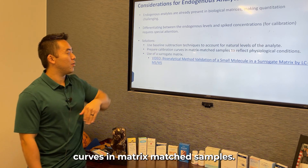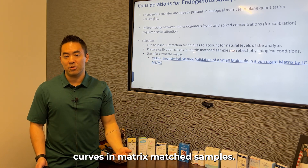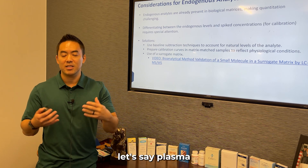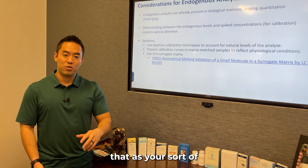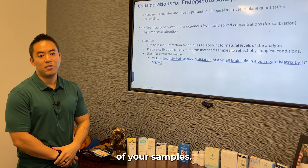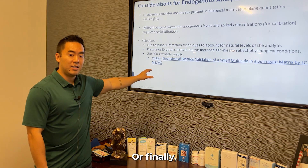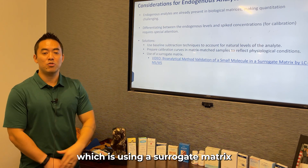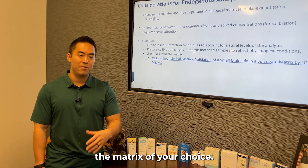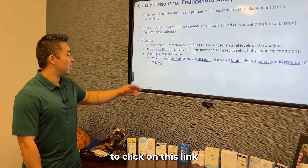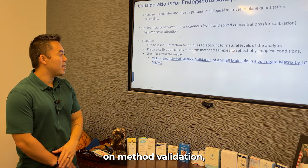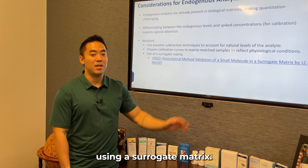Additional solutions include preparing calibration curves in matrix-matched samples — you can pool a variety of different biological matrices, such as plasma, and use that as your representative physiological matrix to reflect the conditions of your samples. Or finally, you can use the novel idea of a surrogate matrix — something that doesn't have that analyte but is meant to mimic the matrix of your choice. I encourage you to click on the link below to watch the video on method validation where we actually talk about using a surrogate matrix.